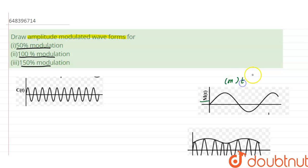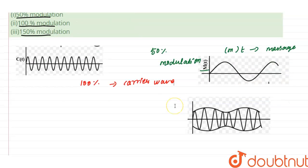M and t is message wave. 50% of the modulation. 100% of the modulation is called as the carrier wave, and the final one, 150% of the modulation, is called as the amplitude modulated wave.